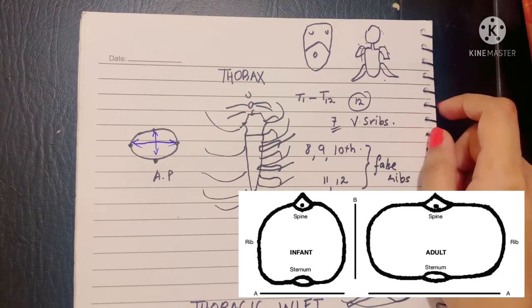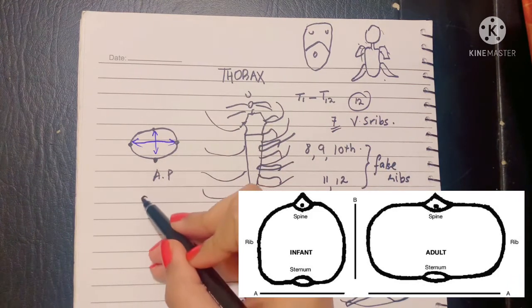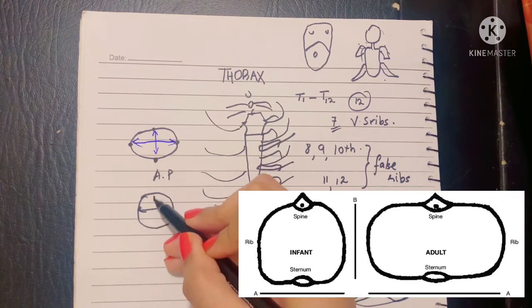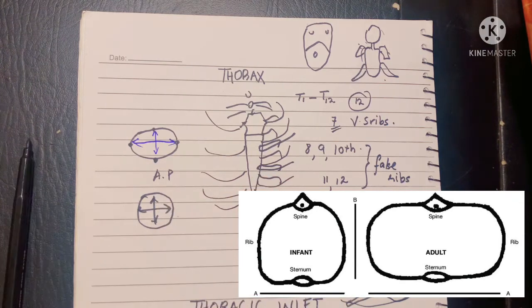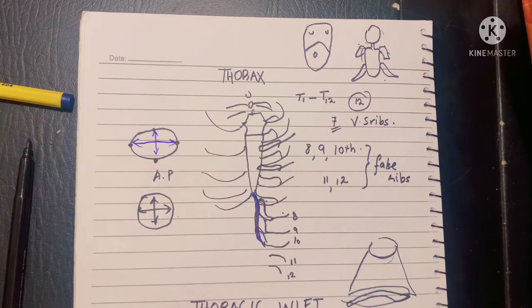Which is in the contrary in infants and kids up to two years. They however have a circular, completely circular, equal AP and transverse diameter thoracic cage. These are the infants and the children up to two years.